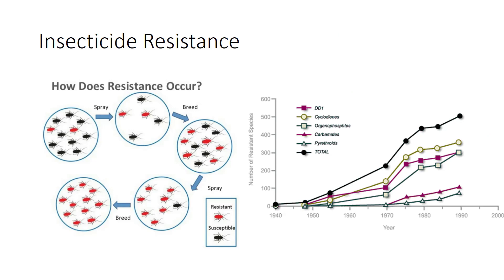Insecticide resistance is the result of selection of individuals that are predisposed genetically to survive exposure to an insecticide. Tolerance, the ability of an individual to survive an insecticide, implies nothing about the basis of survival. Field-evolved resistance is a genetically-based decrease in susceptibility of a population to an insecticide caused by exposure in the field. Over the past few decades, more than 700 species of arthropod pests have developed resistance to one or more insecticides, as well as resistance to toxins that have been genetically engineered into major crop plants.